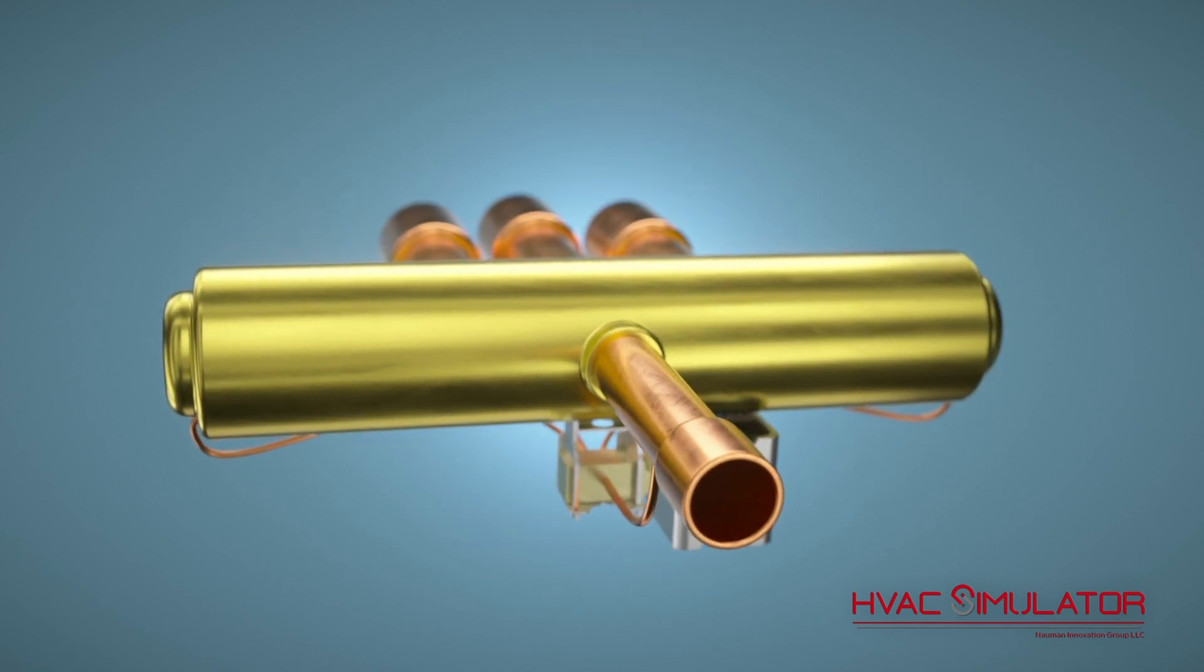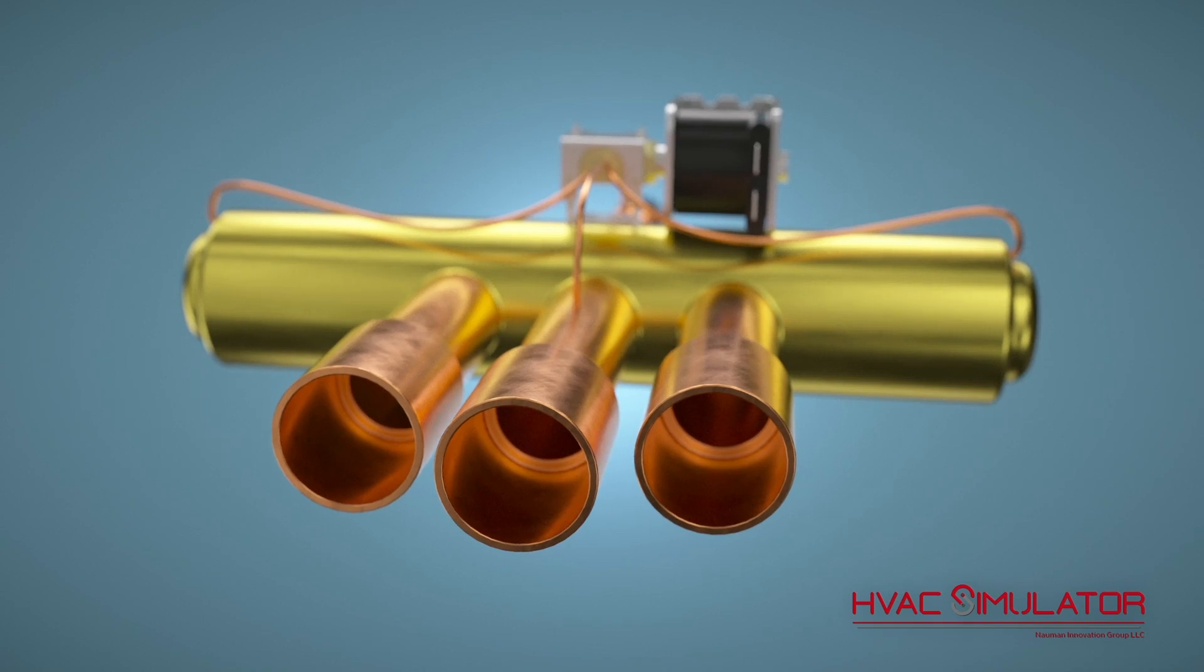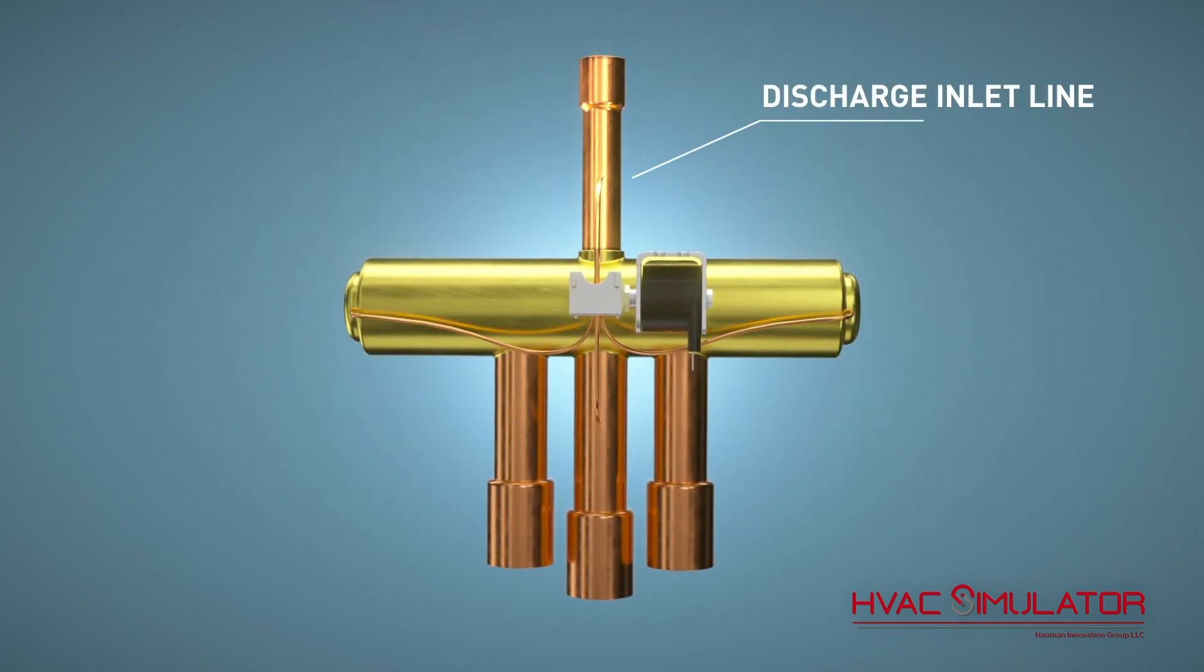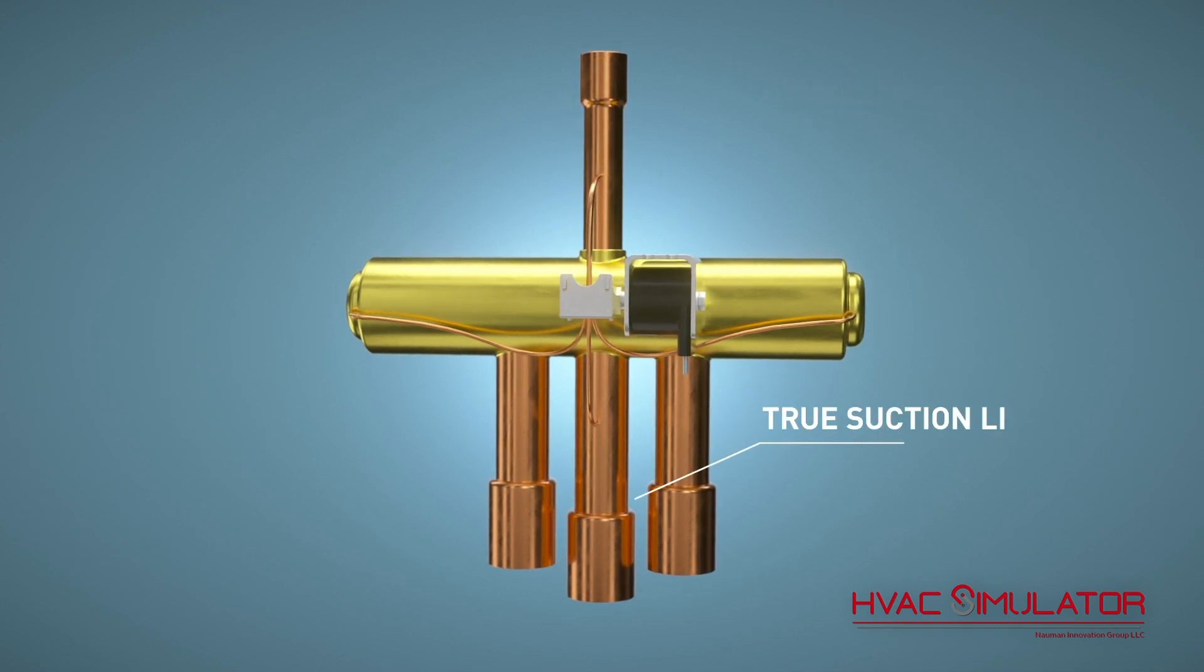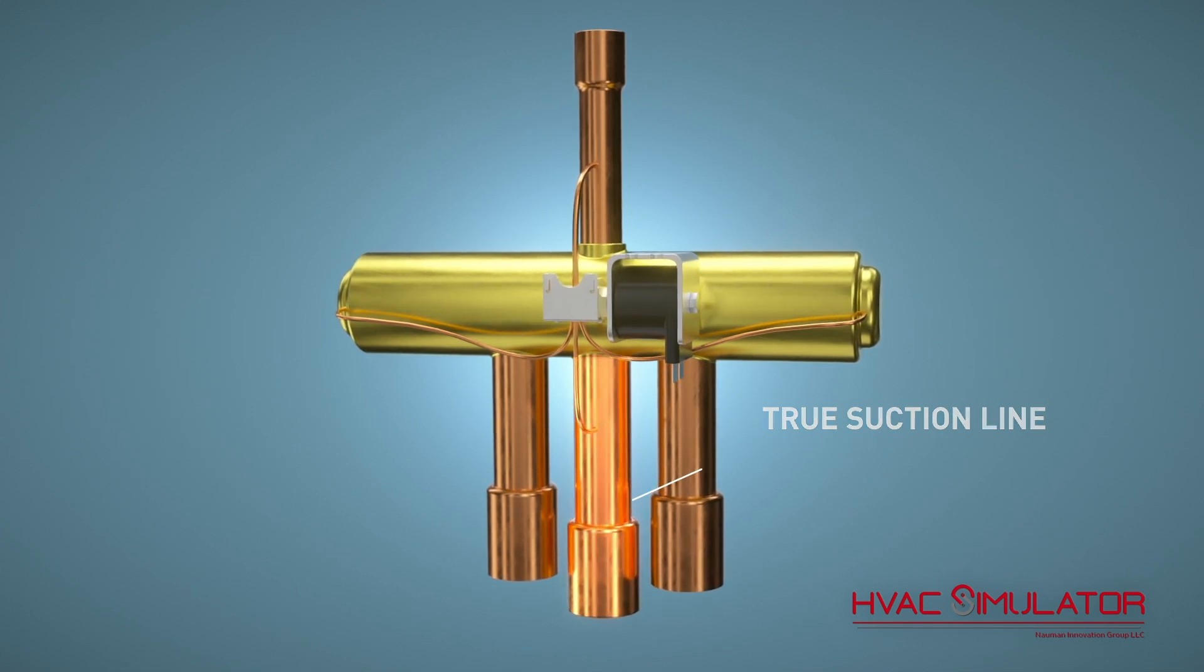Reversion valves are often called four-way valves because they have four ports or connections for refrigerant flow. The discharge inlet line will always be the single line opposite the three other lines. The true suction line will always be a low pressure outlet in the middle of the three pipes and directly connected to the accumulator.